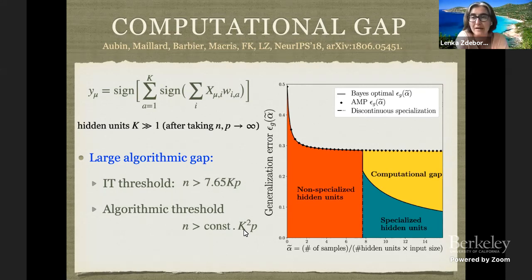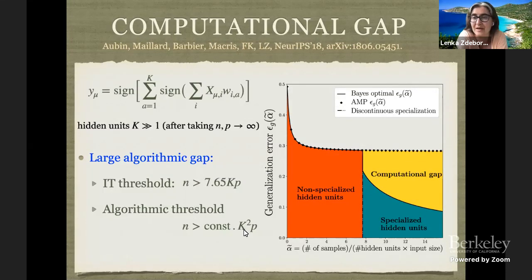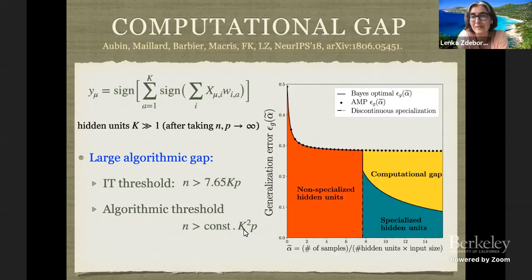As we are adding hidden units, there is actually a big algorithmic gap in this problem with a teacher that matches the student — the teacher is also very wide. So as the teacher gets wider, it becomes quite a complicated function. We don't know whether width kind of makes hard large hard phases appear, but in this precise case it does, and it's an interesting open question.